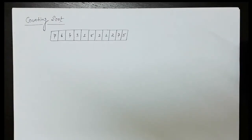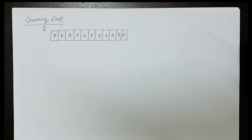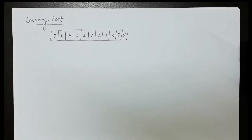Hello everyone. In this lecture, we will discuss the counting sort. In the last lecture, we took an example of counting sort with numbers in a very short range. Counting sort is actually a subsidiary technique that provides help to sorting techniques like Radix sort. It works with numbers in a very short range — for example, 0 to 9 — or if sorting names, the range would be alphabets A to Z.